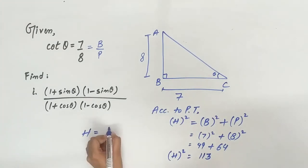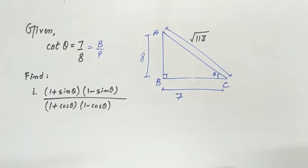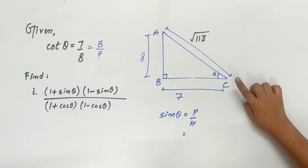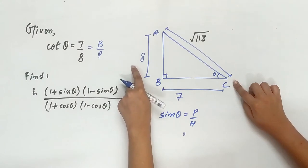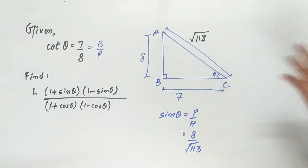So hypotenuse is square root of 113. Let's find out sin theta and cos theta. Sin theta is equal to perpendicular upon hypotenuse. Perpendicular is 8.